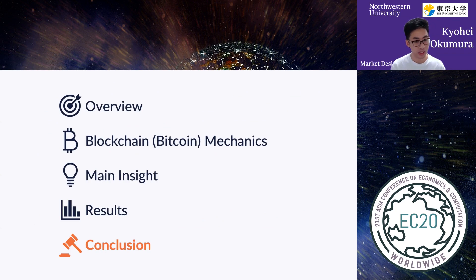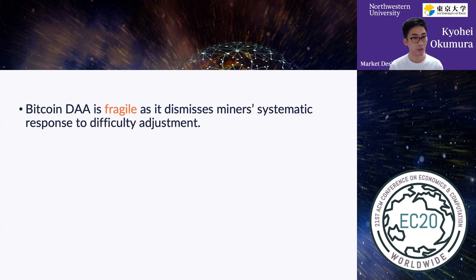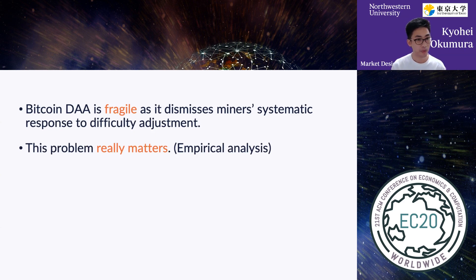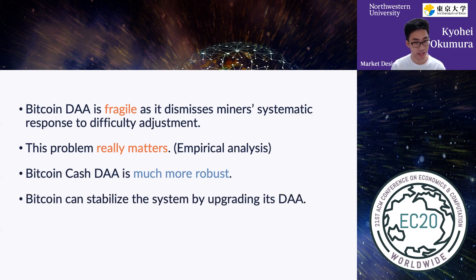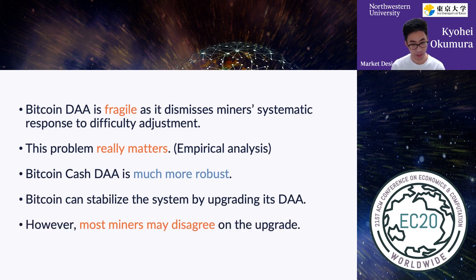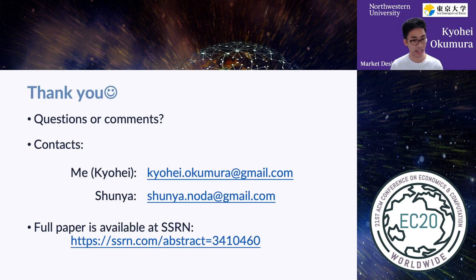We are now almost at the end of the presentation. Let me briefly give you a takeaway. Bitcoin DAA is fragile as it dismisses miners' systematic response to difficulty adjustment — the change in winning rate. This problem really matters in practice. Bitcoin Cash DAA is much more robust, and Bitcoin can stabilize the system by upgrading its DAA. However, most miners may disagree on the upgrade. Thank you for listening, and any questions or comments are highly appreciated.